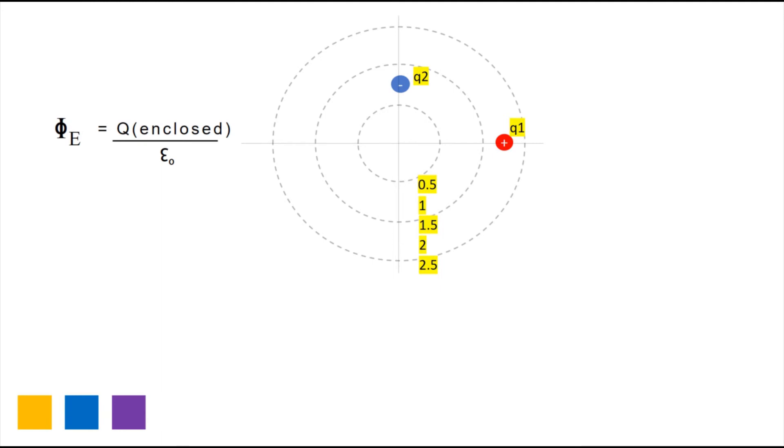So for the 0.500 meter radius, or this smallest circle, you can see that there's no charge enclosed, which means that the electric flux for this area is 0 nC over epsilon 0.